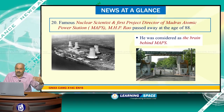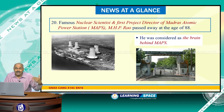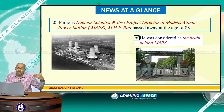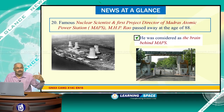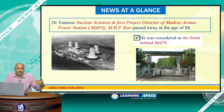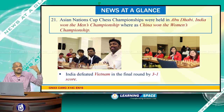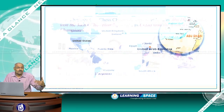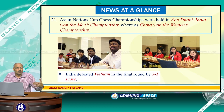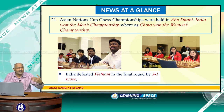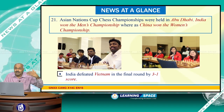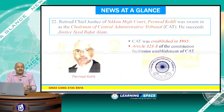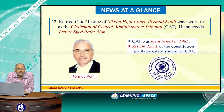Famous nuclear scientist and first project director of Madras Atomic Power Station, MHP Rao, passed away at the age of 88. He was considered the brain behind the Madras Atomic Power Station. The Asian Nations Cup Chess Championships were held, with India winning the men's championship while the women's championship went to China. India defeated Vietnam in the final round by a score of 3-1.